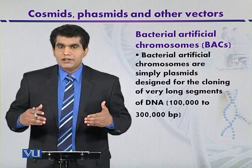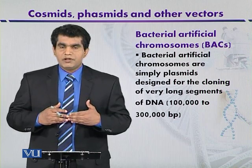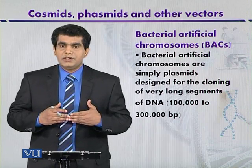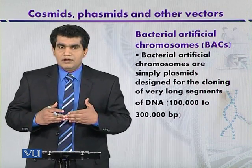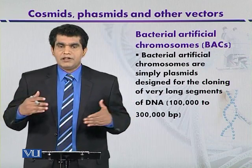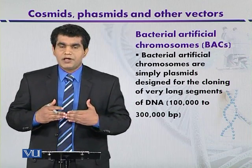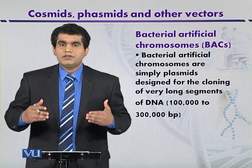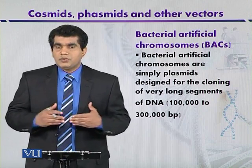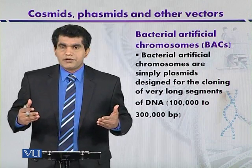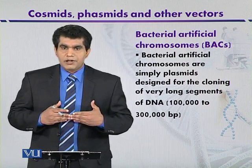If we have a look at the genetic map of the bacterial artificial chromosome, we will find that it contains a par region from the F plasmid. This par region — from 'partition' — regulates the equal distribution of the plasmid to the daughter cells. In addition to that, BACs also contain a region of replication that can regulate the copy number of the plasmids.